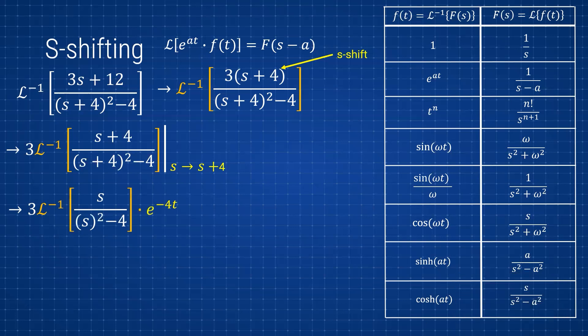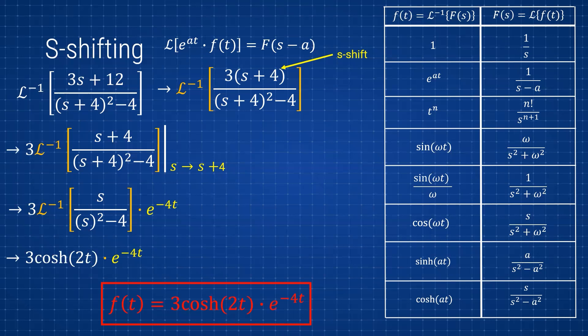The Laplace expression now looks easier and can be found in the table — it corresponds to hyperbolic cosine with a equal to 2. The final answer is just that result times the exponential: 3·cosh(2t)·e^(−4t). That is how you find the s-shift going from the s-domain back to the t-domain, and also how you find it from the t-domain to the s-domain — an exponential in t corresponds to an s-shift in s. We'll look at t-shifting later. Good luck!